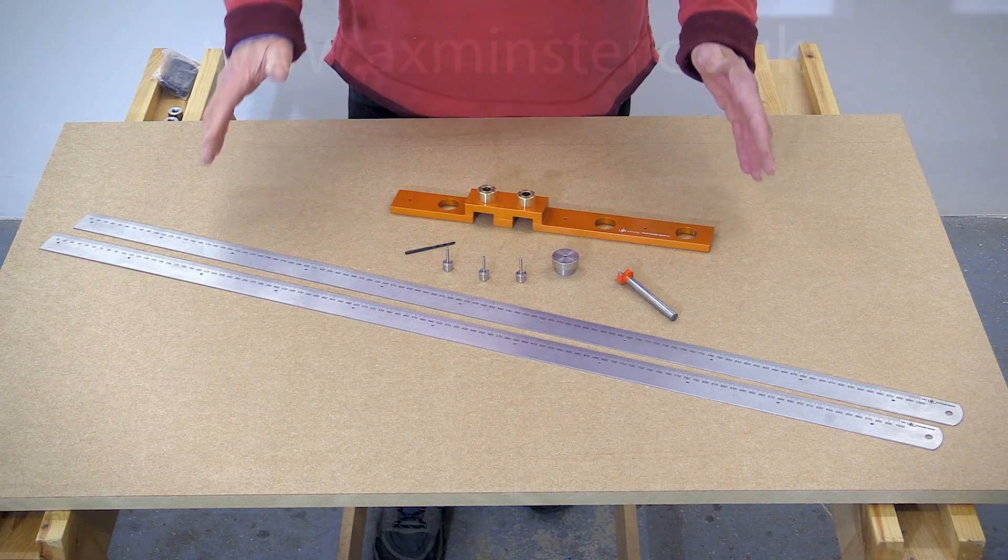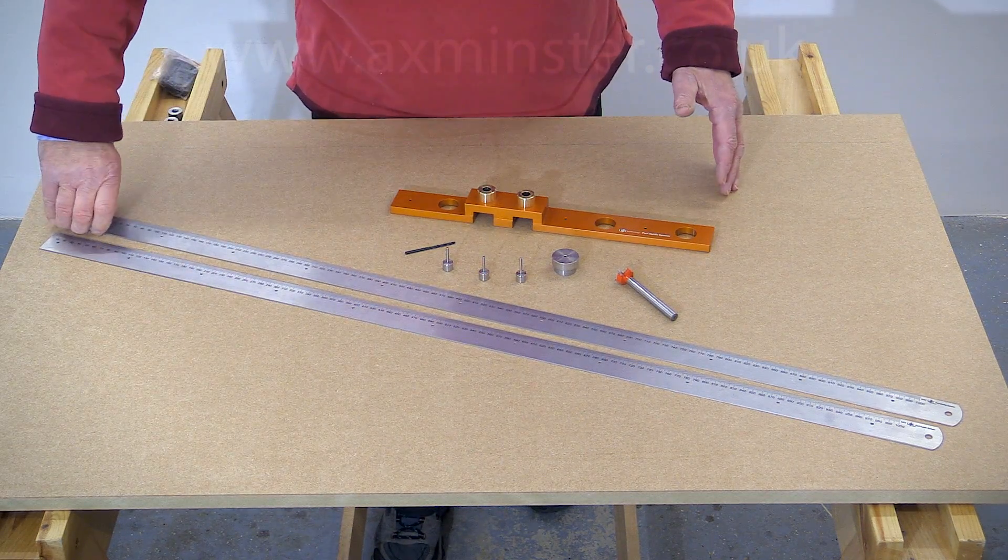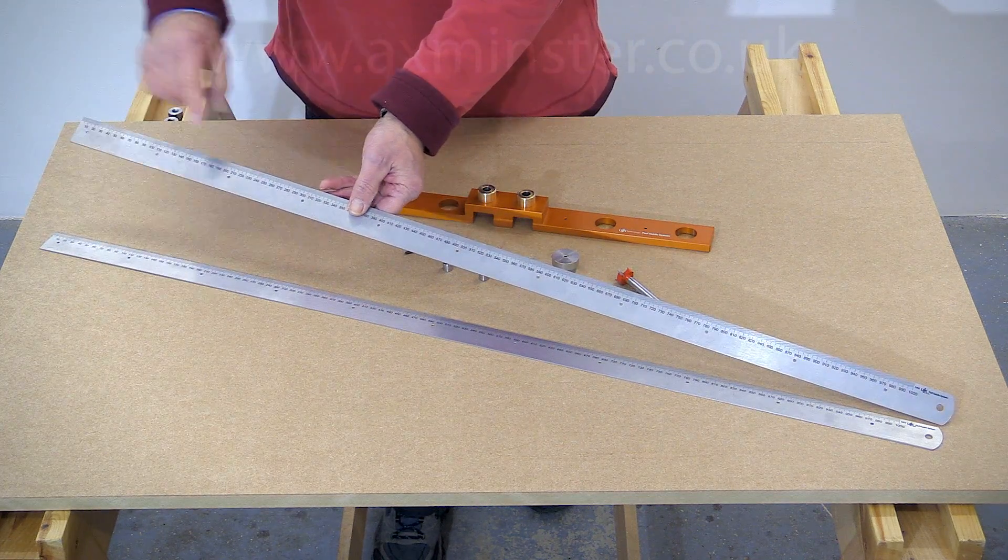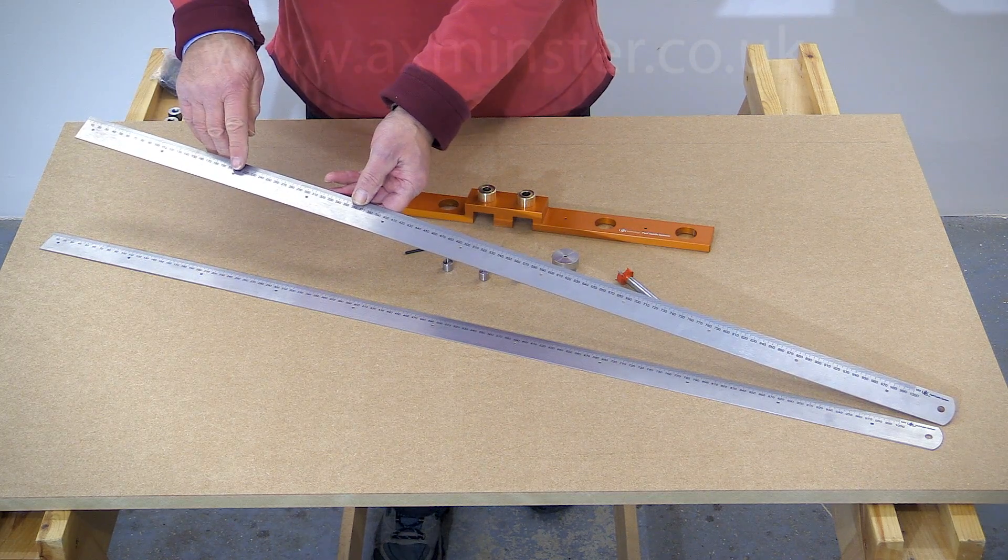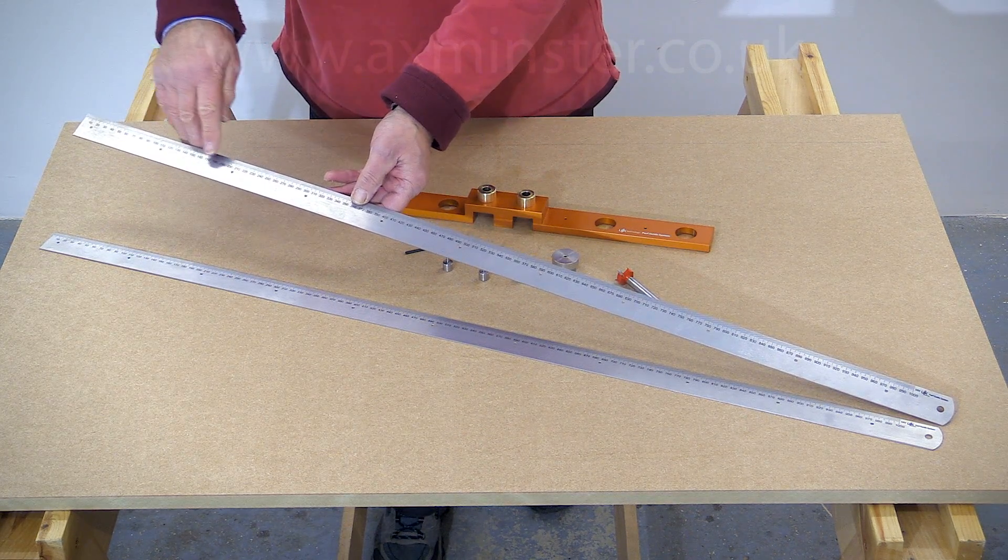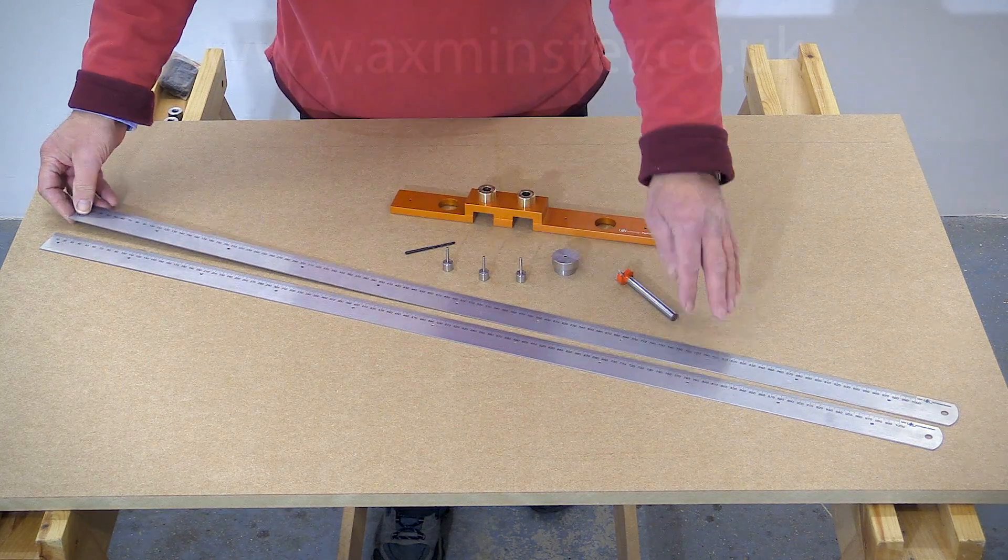Now when you receive your UJK Path Guide system this is what you get. You get a pair of steel rulers and they've got metric graduations and these have a CNC created pattern of three millimeter holes along their length and these are at 96 millimeter centers.